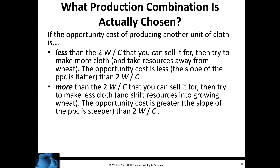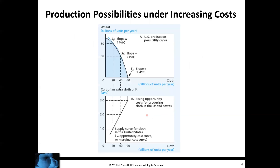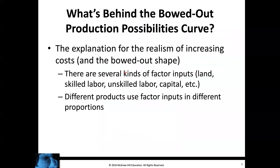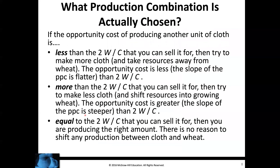Looking at the curve, if the opportunity cost is less than two, we'll want to add more cloth — it costs us less to make more cloth. If the cost is higher, we'll make less cloth and more wheat. But if the opportunity cost equals the two wheat per cloth we can sell it for, there's no reason to shift any production. We're at an equilibrium point and will continue to produce the amounts we're currently producing.